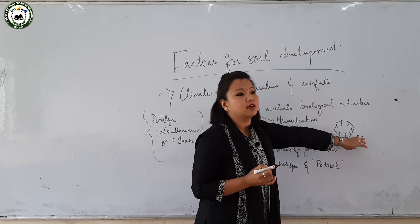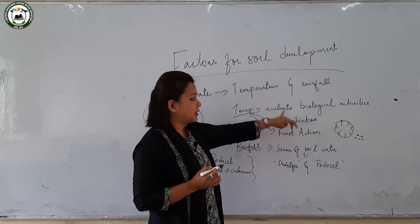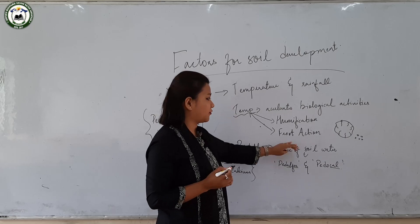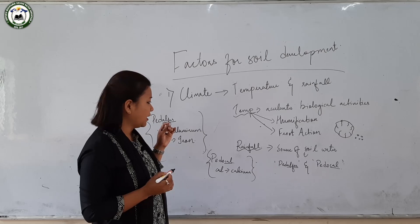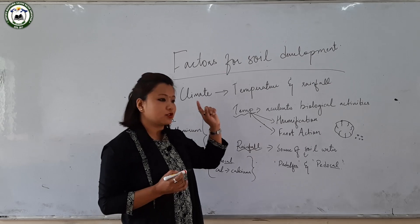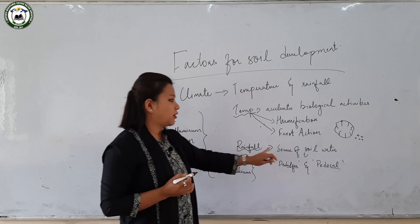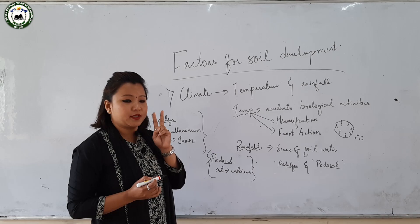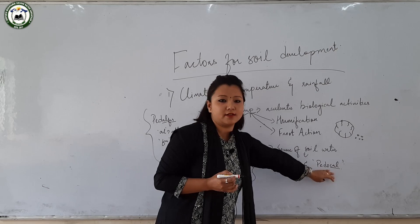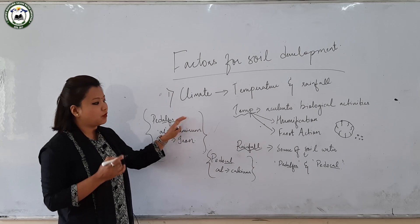This disintegration accelerates the formation of soil. So temperature accelerates biological activities, adds humus, and through frost action adds minerals to the soil. In terms of rainfall, rainfall is one of the major sources for soil water. Due to rainfall, two kinds of soil are basically developed: one is pedalfer and the other is pedocal. Pedalfer soils develop under conditions of 65 cm or above 65 cm of rainfall annually.